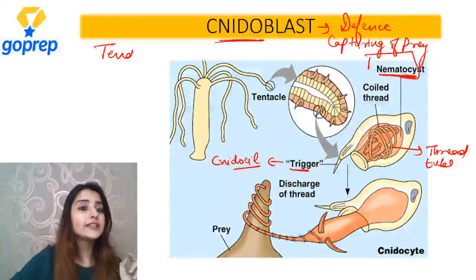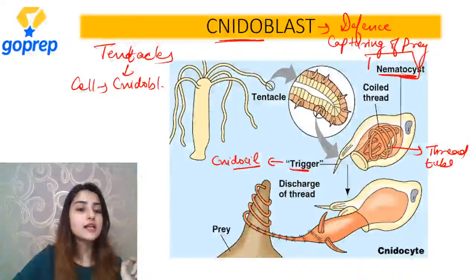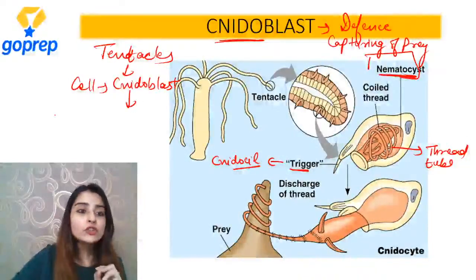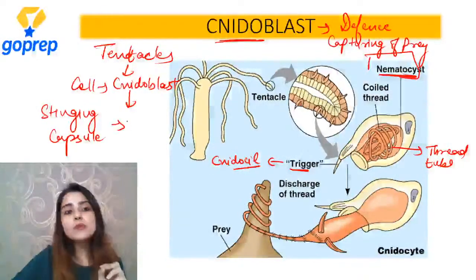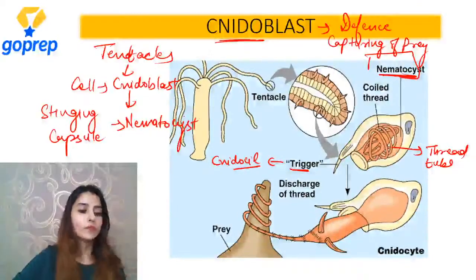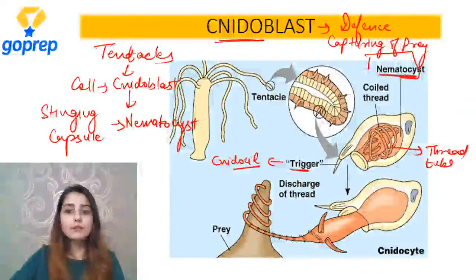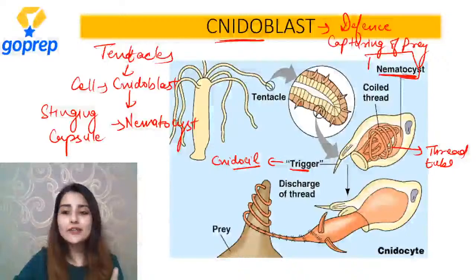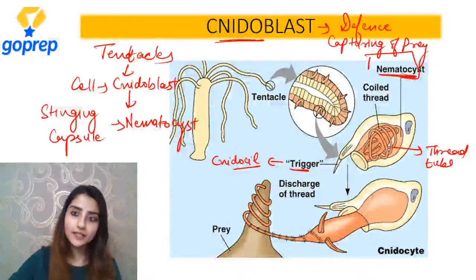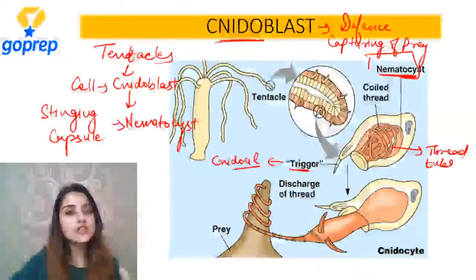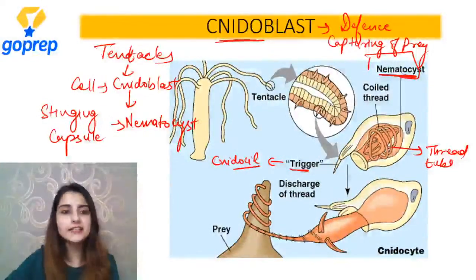Kiske oopar hote hain? Tentacles ke oopar. Cell ko kya bola jaata hai? Nidoblast. Isi wajah se phylum ka kya naam hai? Cnidaria. Nidoblast ke paas kya hai? Stinging capsule. Is stinging capsule ko kya bolte hain? Nematocyst. This is how the whole nidoblast works.